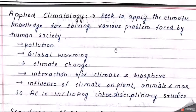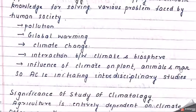The fifth division is applied climatology. We use all the previous information and apply it in the real world through models. It seeks to apply climate knowledge to solve various problems faced by human society — like pollution, global warming, climate change, interaction between climate and the biosphere, and the influence of climate on plants, animals, and man. Applied climatology initiates an interdisciplinary state, integrating various fields to arrive at particular solutions.